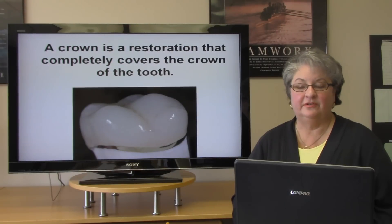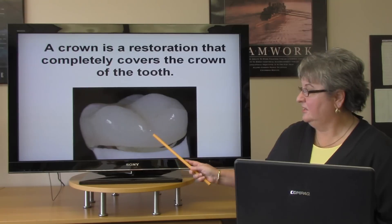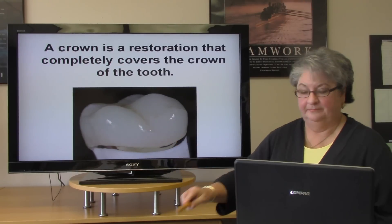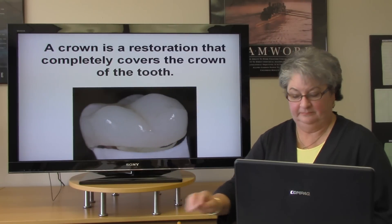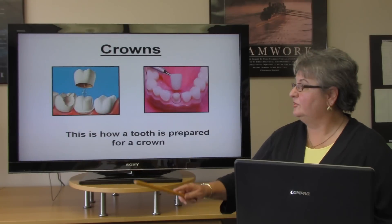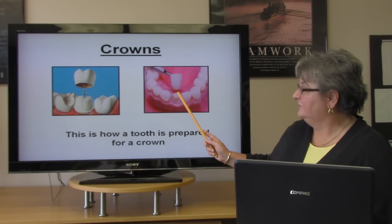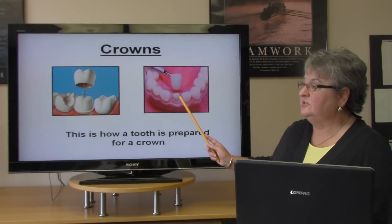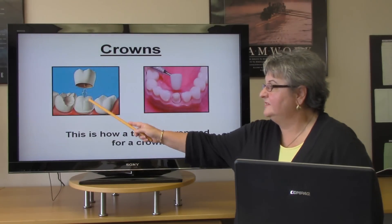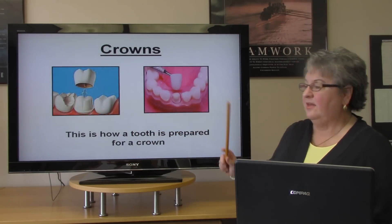This is a picture of a crown — it is covering the entire tooth. This also shows how the doctor prepares for the crown. He grinds the tooth down into a thimble, and then he places the crown, which is the full covering, over that thimble.